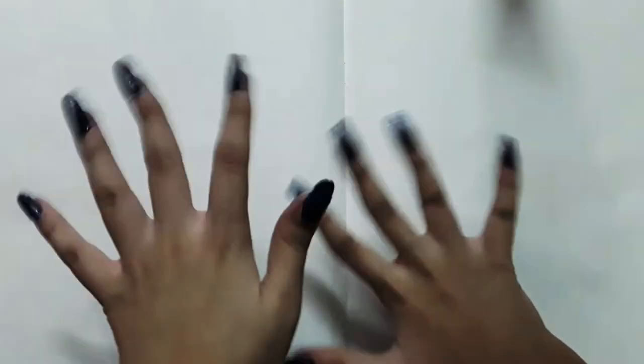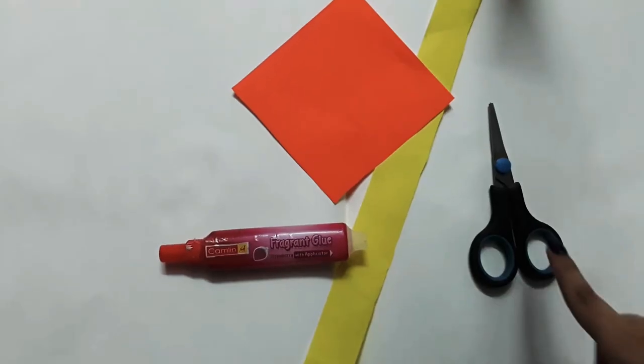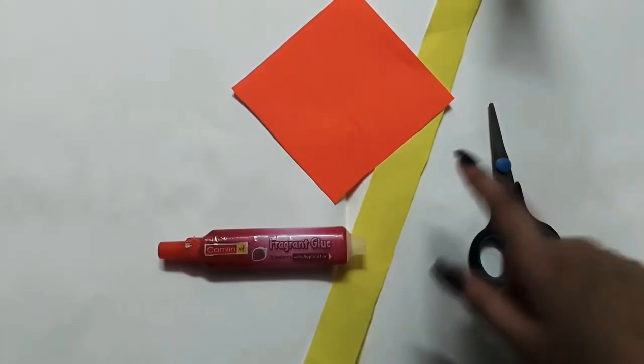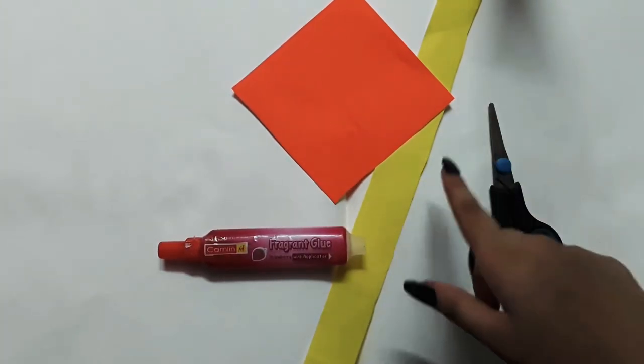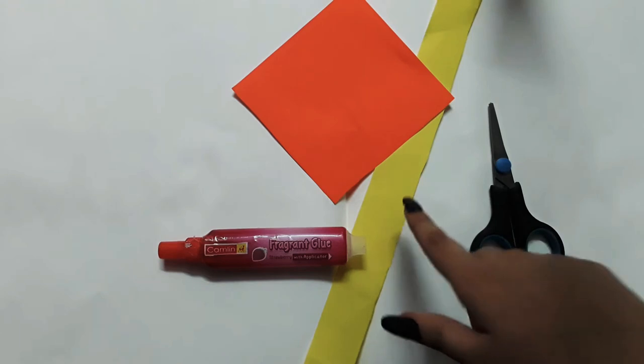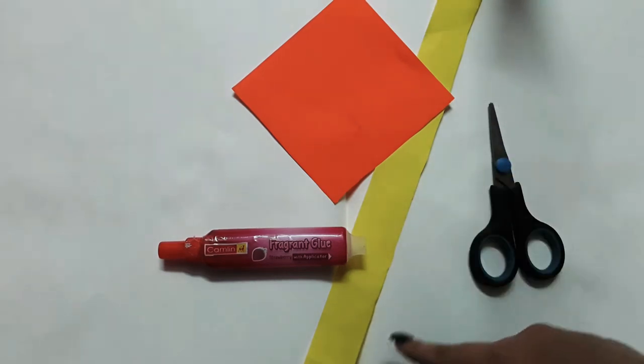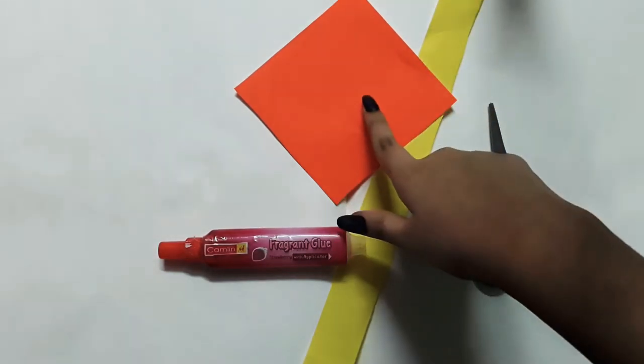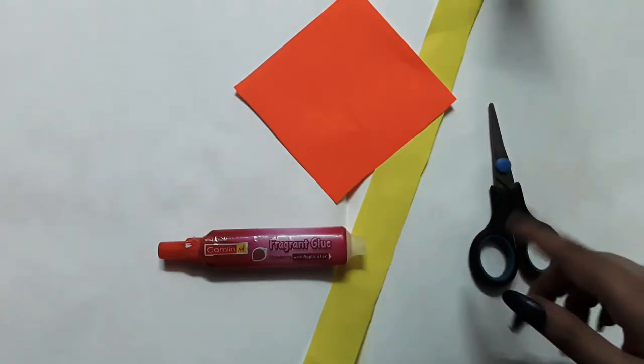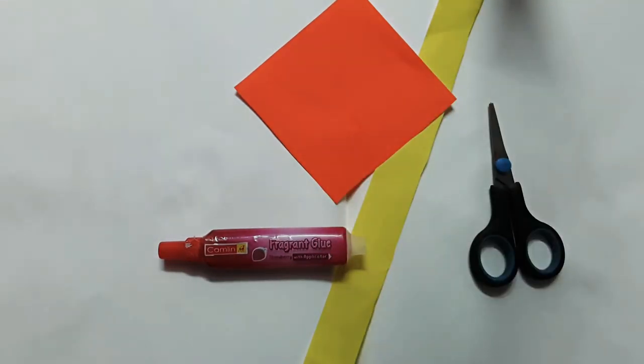So let's get started. The things you're gonna need are scissors, glue, and for the inner pollen of the flower you're gonna need a yellow colored strip of paper. For your flower's main petals, you're gonna need another color.